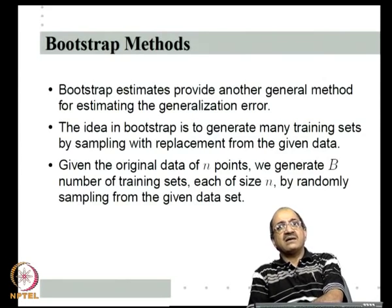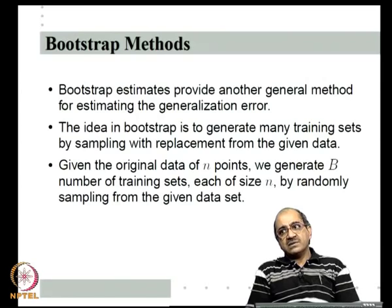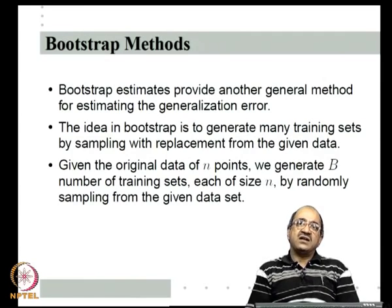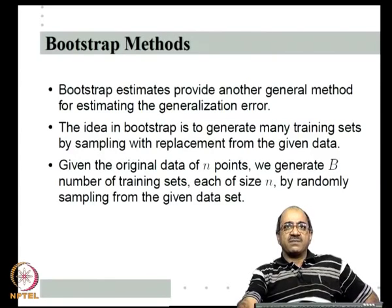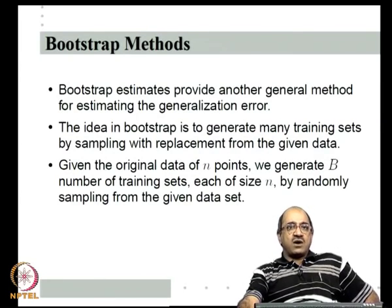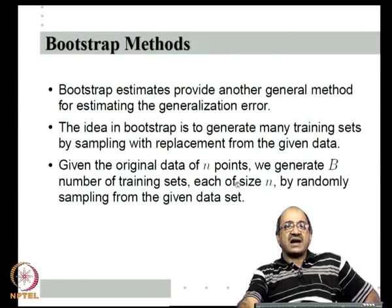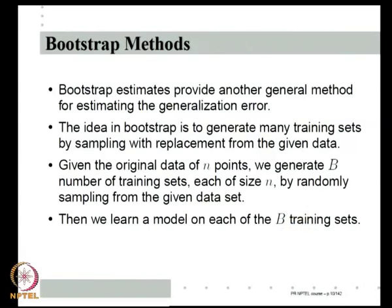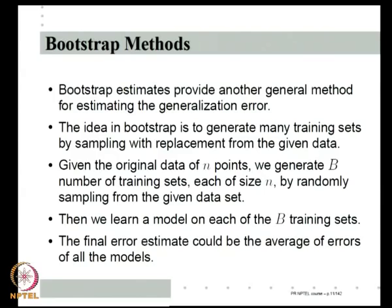Essentially, we generate multiple training data sets by sampling with replacement from our one given training data set. Given an original data set of n points, we generate n random numbers each uniformly distributed between 1 and n — that gives one training data set. We can repeat this to get as many training data sets as we want. We generate B such training data sets, each of size n, by random sampling. Then, like in the cross-validation case, we learn one model on each of the B training data sets, giving us B models f̂_b.